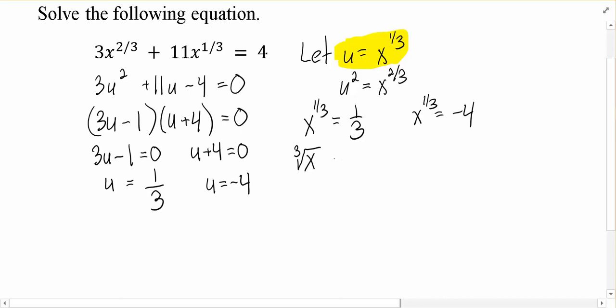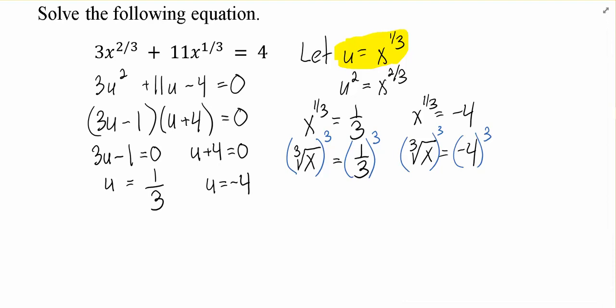So the left-hand side is cube root of x. And now we want to say, how do I solve this? How do I get the x by itself? How do I undo the cube root? I undo the cube root with a cube. So I actually need to raise both sides to the 3rd power in order to undo that cube root.